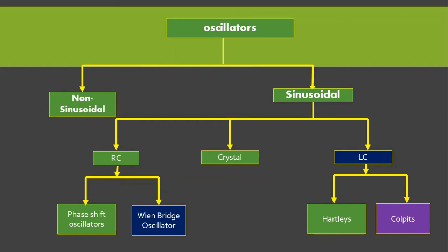Oscillators are divided into two categories: the non-sinusoidal oscillator, where the output is non-sinusoidal, and the sinusoidal oscillators, where the output is sinusoidal. The sinusoidal oscillators are further divided into three categories: RC oscillators, crystal oscillators, and LC oscillators. RC oscillators are of two types: phase shift oscillators and Wien bridge oscillators. Similarly, LC oscillators are of two types: Hartley oscillators and Colpitts oscillators.